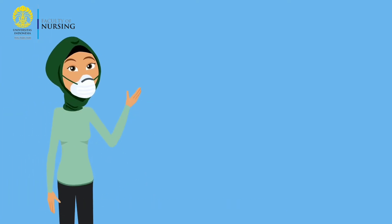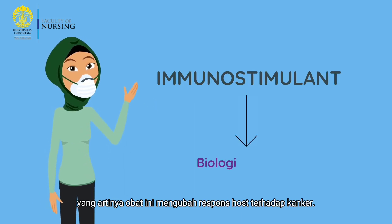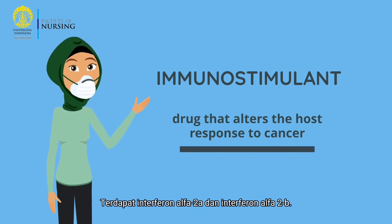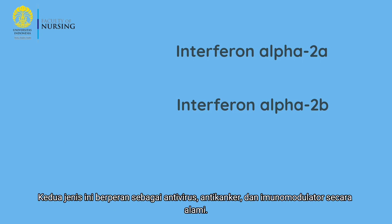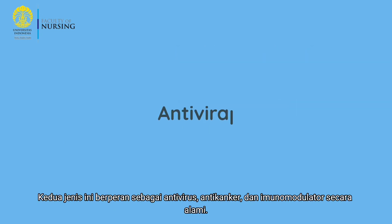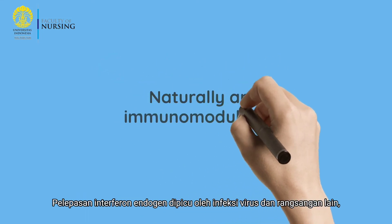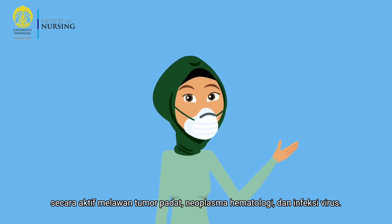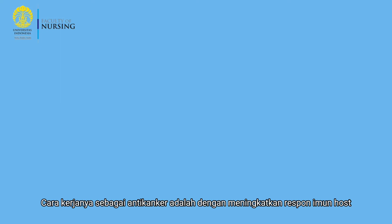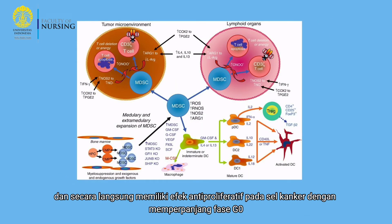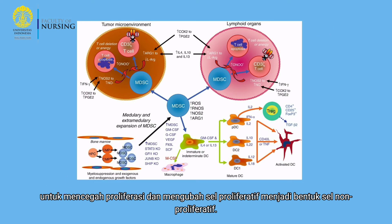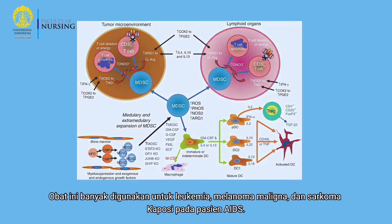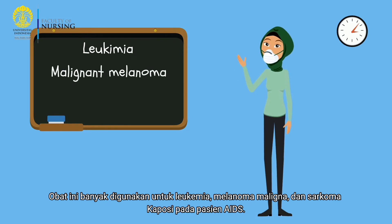The last two types are immunostimulants and other anticancer drugs. Immunostimulants are biological response modifiers — drugs that alter the host's response to cancer. These include interferon alpha-2a and interferon alpha-2b. Both act as antivirals, anticancer agents, and immunomodulators. Endogenous interferon release, triggered by viral infection and other stimuli, actively fights solid tumors, hematological neoplasms, and viral infections. As an anticancer, it enhances the host immune response and has a direct anti-proliferative effect on cancer cells by prolonging the G0 phase and converting proliferative cells into non-proliferative form. This drug is mostly used for leukemia, malignant melanoma, and Kaposi's sarcoma in AIDS patients.